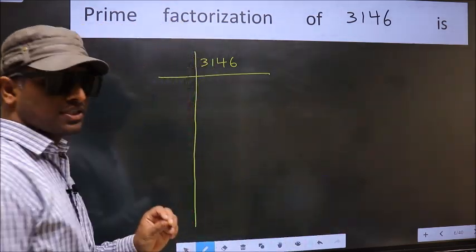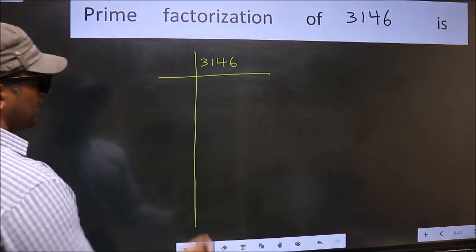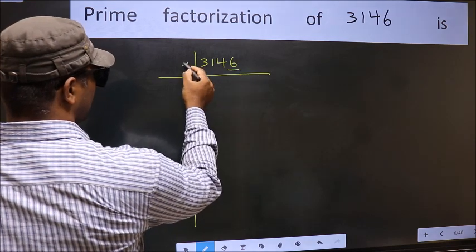This is your step 1. Next, in this number, last digit 6 is even, so take 2.